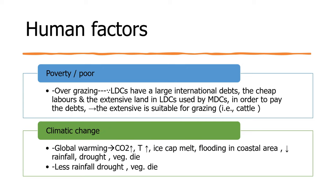Another major problem is climate change, which leads to increased carbon dioxide, rising temperatures, melting of ice, flooding in coastal areas, less rainfall, more drought, and vegetation die-out. Less precipitation is one of the main consequences of climate change contributing to desertification.